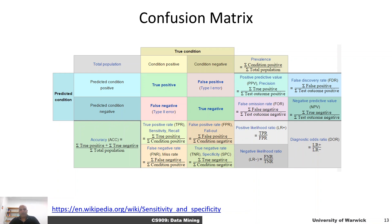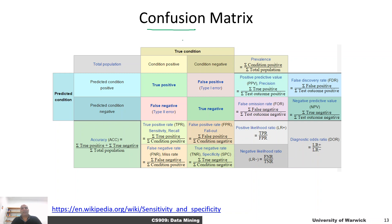A more generic way of analyzing the accuracy of a binary classifier is to use what is called a confusion matrix. The name confusion matrix comes from the fact that it allows us to analyze how the classifier confuses between different classes.